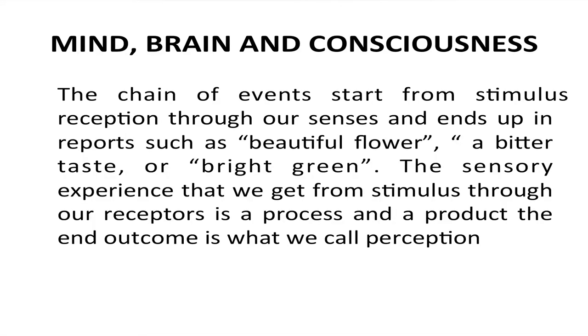So learners, that was all about the different sense organs which help us in sensing the world around us. Let us come to the next objective of today's discussion: mind, brain, and consciousness. You already know the role of the senses in providing information about the external and internal world. However, receiving information from the external world and transmitting it to the brain is just half the story. The chain of events starts from stimulus reception through our senses and ends up in reports such as 'beautiful flower,' 'a bitter taste,' or 'bright green.' That is, how do we give meaning to what we have sensed?